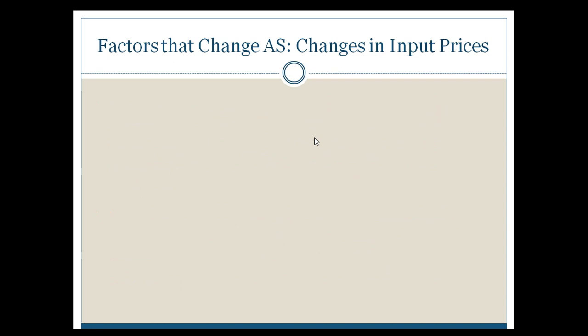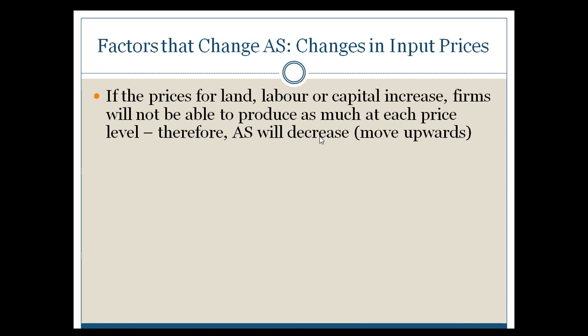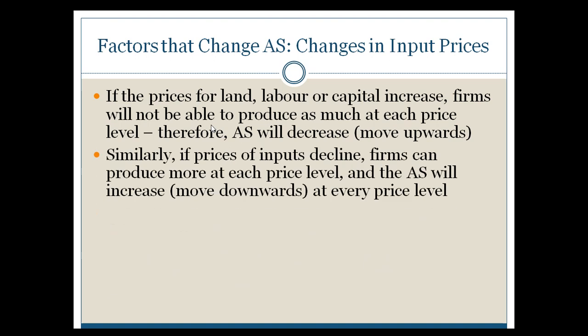The first factor we'll look at today is changes in input prices. These are things you use to make products with, and if they change in price — usually due to external worldwide factors — you'll tend to see a change in aggregate supply. If prices go upward, it tends to have a negative impact on aggregate supply and tends to lead to a higher average level of prices. However, if things decrease in price, it generally has a positive benefit because it makes production cheaper and gives you a better opportunity to produce.